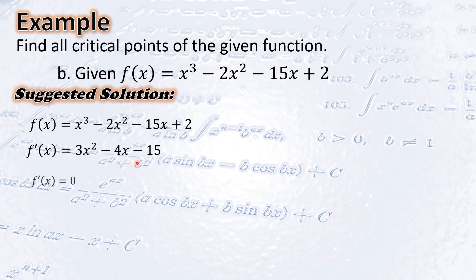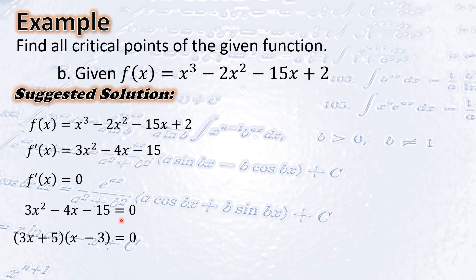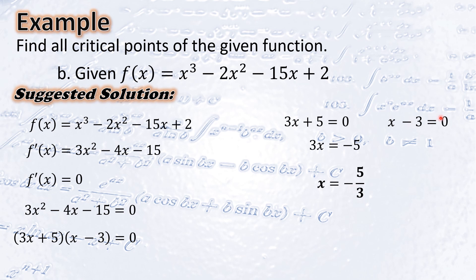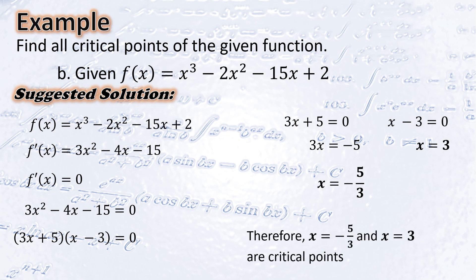The critical points are obtained at f′(x) = 0. Hence, we equate 3x² − 4x − 15 = 0. We extract the roots of this quadratic by factoring: (3x + 5)(x − 3) = 0. From 3x + 5 = 0, we get x = −5/3. From x − 3 = 0, we get x = 3. Hence, x = −5/3 and x = 3 are critical points.